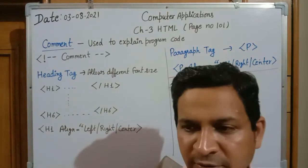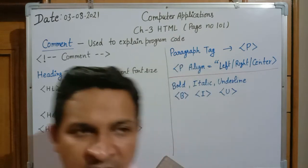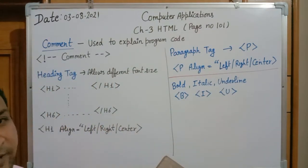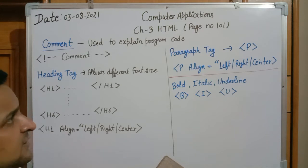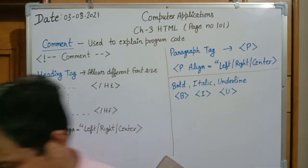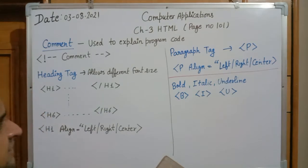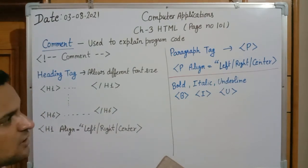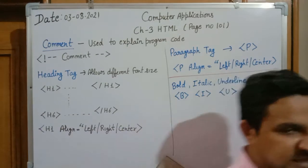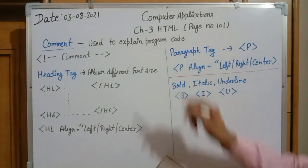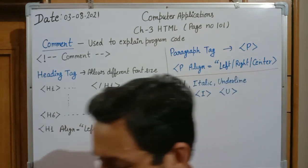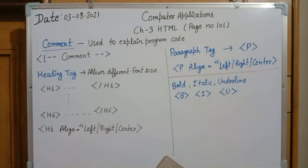Good morning dear students. In the last video we discussed chapter 3 up to page 100, and the last topic was HR, the horizontal rule. Today we are continuing with the next topic from chapter 3, HTML, page number 101 as per your book.